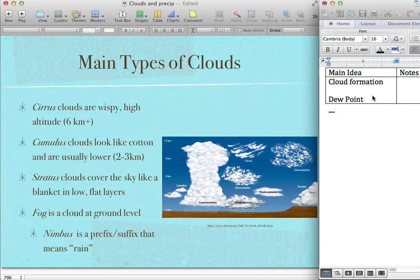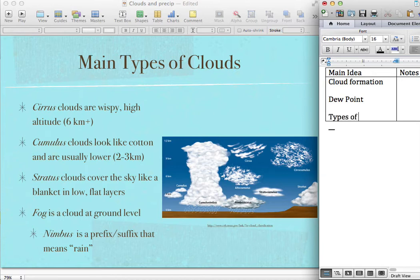Main types of clouds. We're just going to go over the very basic types of clouds. We're not going to go into a ton of detail in the little combinations. We've got cirrus clouds. These are wispy, high-altitude clouds. They look kind of like horses' tails.